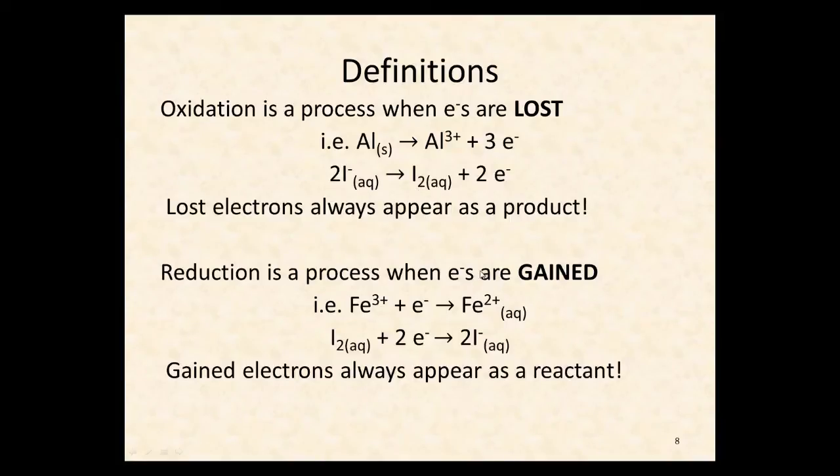Reduction, on the other hand, is a process where electrons are gained. So here we have iron three plus gaining an electron to become iron two plus. Adding those charges together, we go from three plus plus a negative to two plus. So iron here has undergone reduction. Iodine now, we can add two electrons to iodine and get iodide and we have achieved reduction. Notice that it's the opposite here of the oxidation. So the iodine, we went from iodide to iodine plus two electrons. If we take the iodine plus two electrons, we go back to iodide. So if we're gaining electrons, they always appear as a reactant. On the left-hand side of the equation.